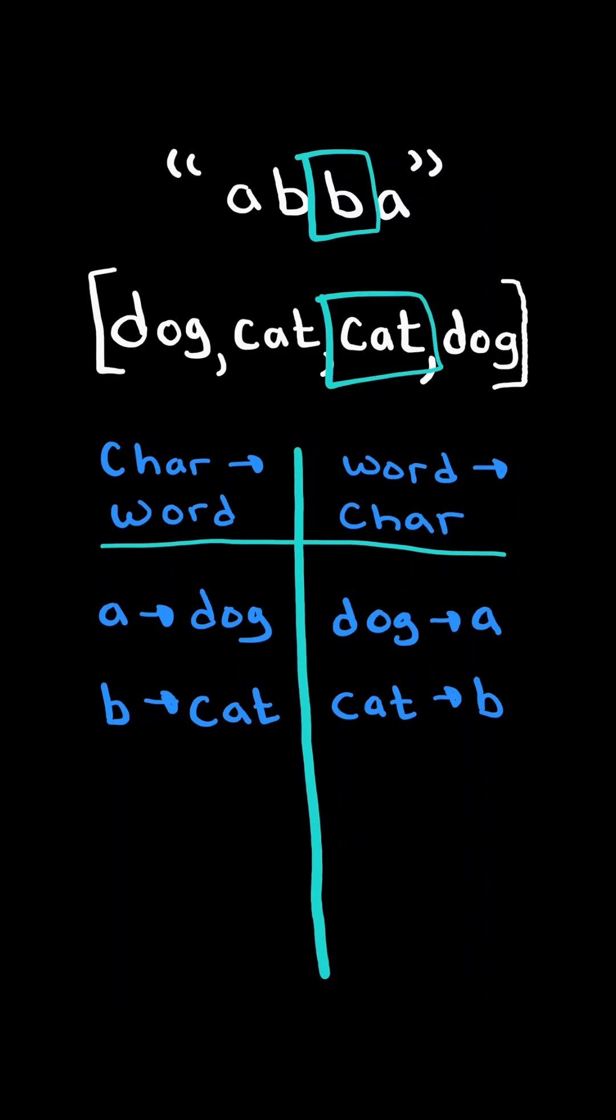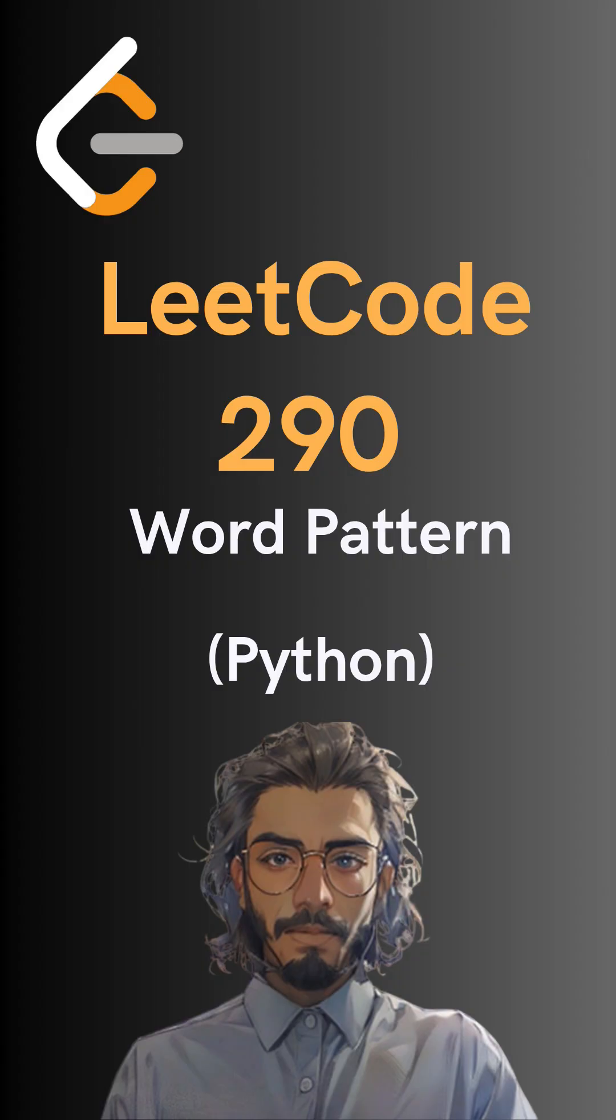And if we come across characters or words already in the dictionary, we check if the character maps to the word and the word maps to the character. Assume instead of B it was M. If cat already maps to B, it cannot also map to M. And here's the code to do so. Please like and follow for more.